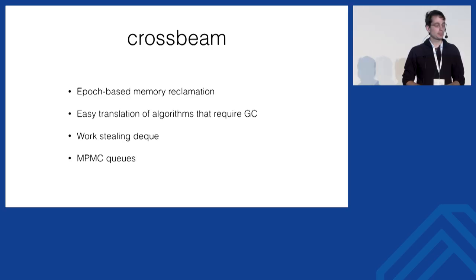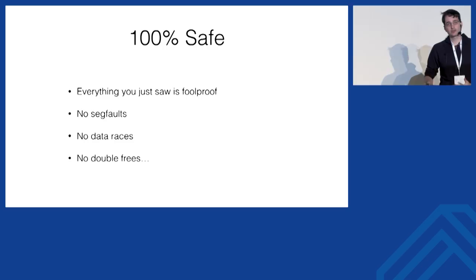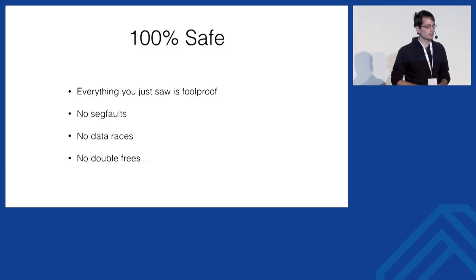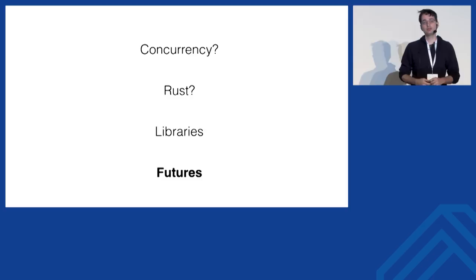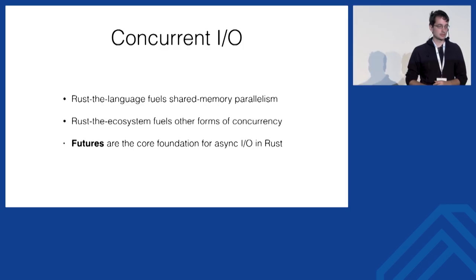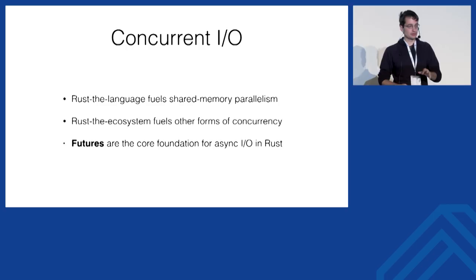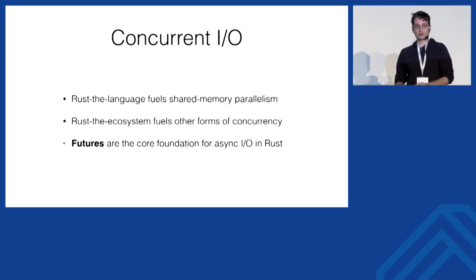To wrap up the library aspect of concurrency in Rust — everything we just saw was 100% safe. There's no way to misuse these. You cannot get a data race, you cannot get a segfault, no double-frees. Now I want to shift gears to talk about futures — not so much concurrency with multiple cores, but asynchronous I/O: high-scale servers, lots of TCP connections, many concurrent actors. The language itself fuels shared memory parallelism with ownership and borrowing; the ecosystem gives us mutexes, locks, arcs, and channels; and futures are the async I/O story.